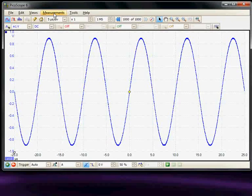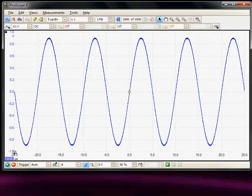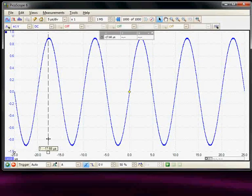So if we wanted to measure, for example, the cycle time, we could do it manually by selecting the cursors, and we have a little icon where we can pick up the cursors.